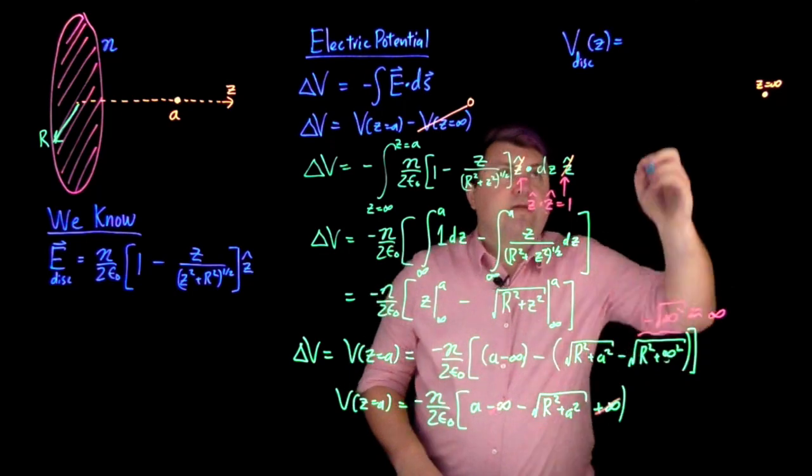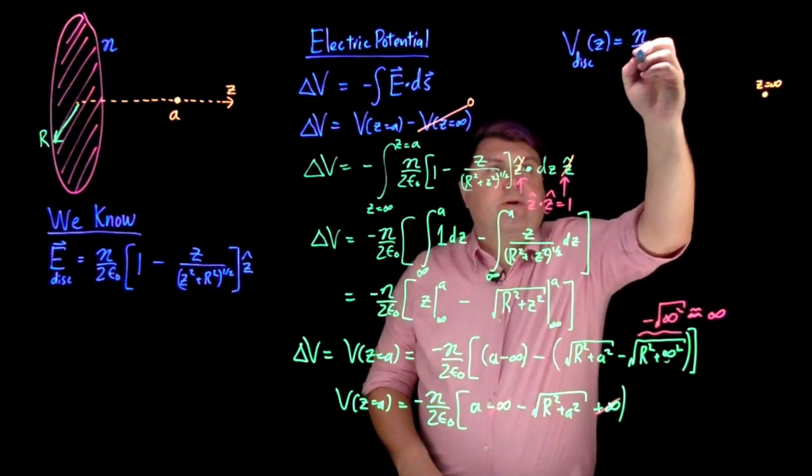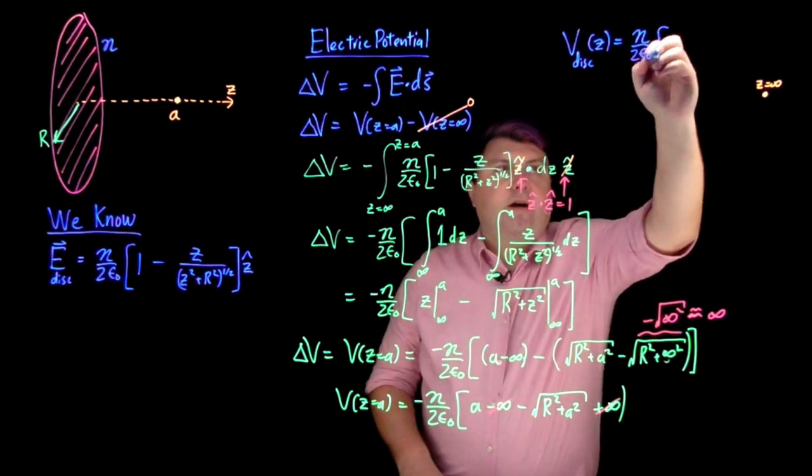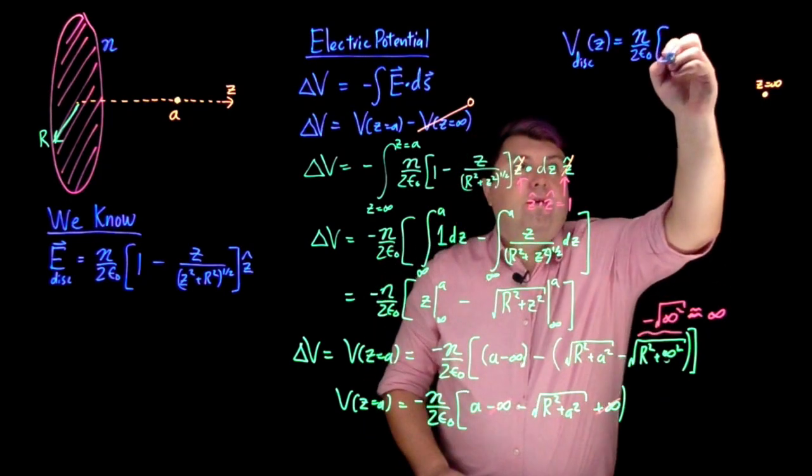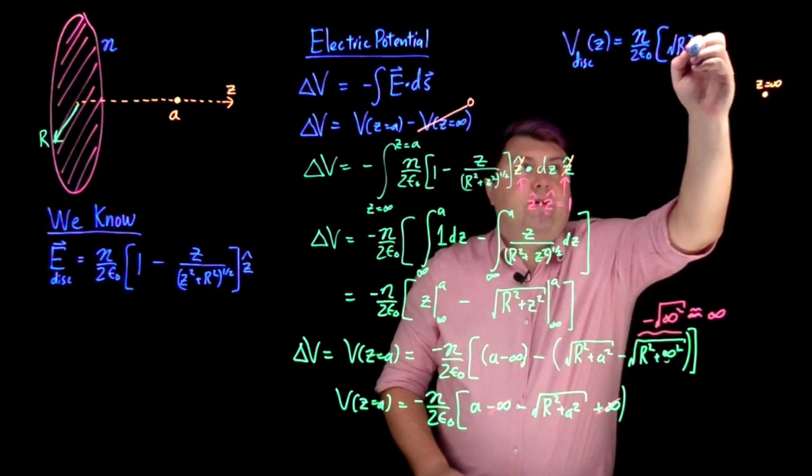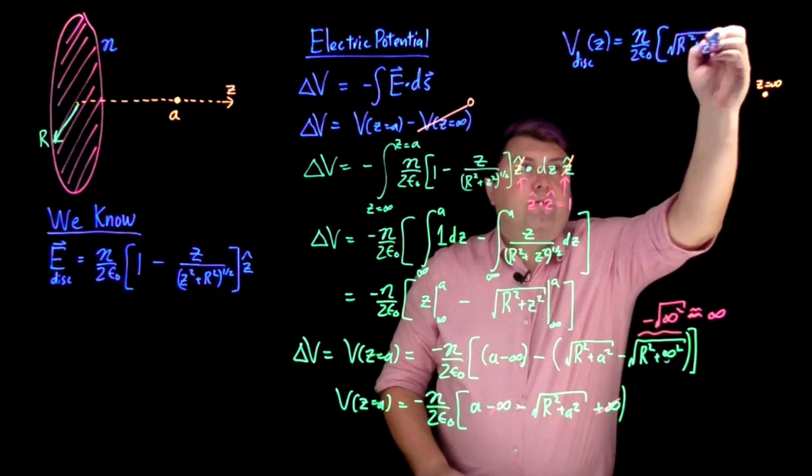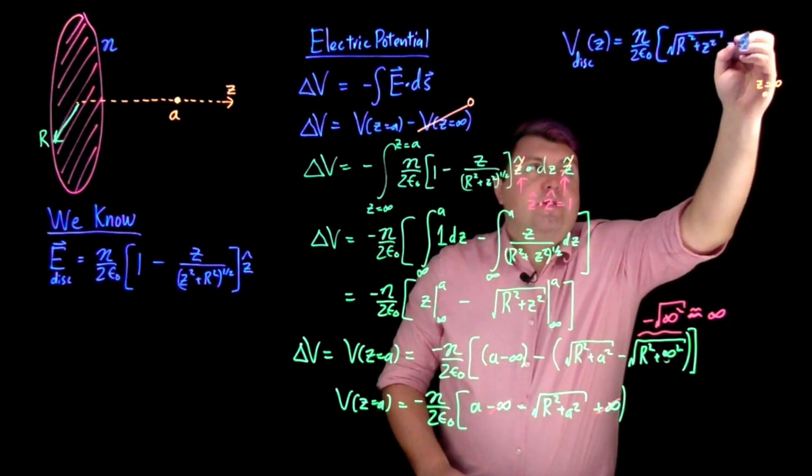But I have this a minus r squared plus a squared, so I can actually factor this negative through. So I have eta over two epsilon not. If I factor this through then I have positive r squared plus z squared minus z.